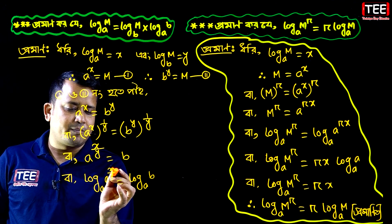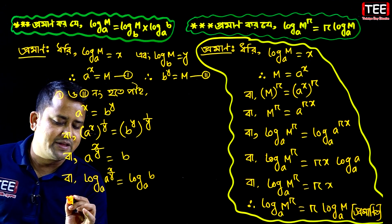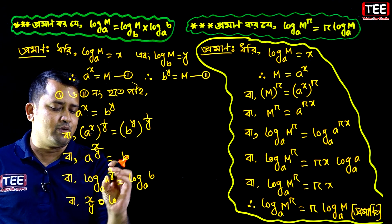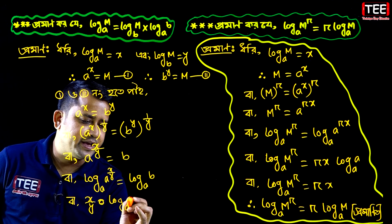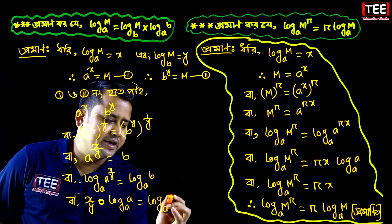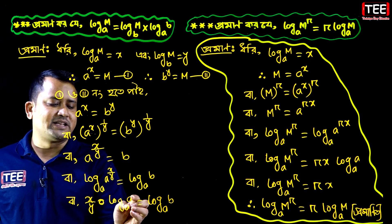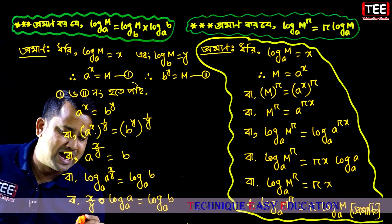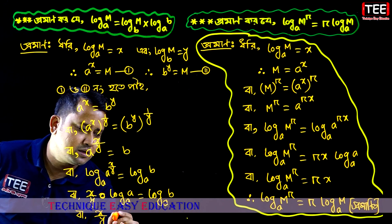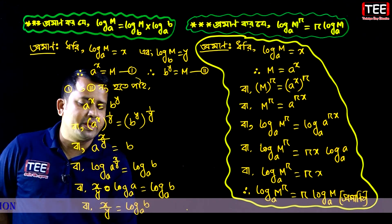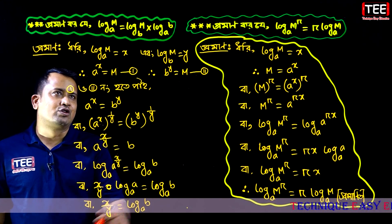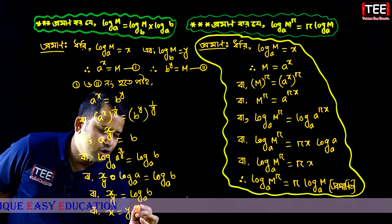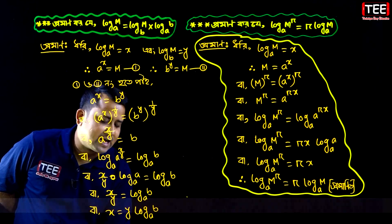So x by y equals log base a of b. Since log base a of a equals 1, and x by y remains, we terminate with x by y equal to log base a of b. This gives us the change of base formula.